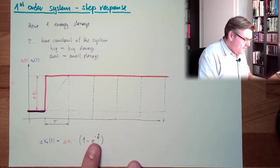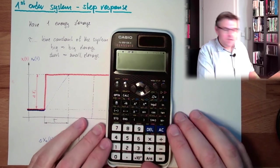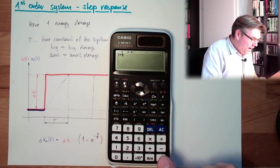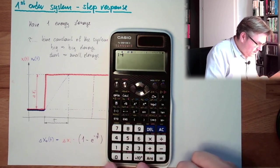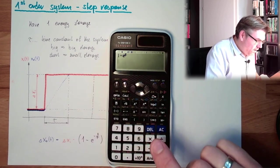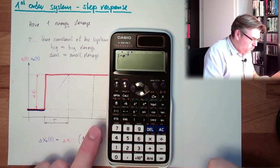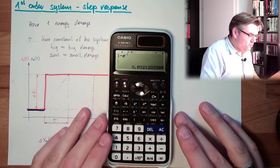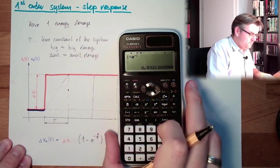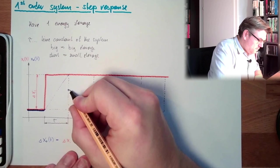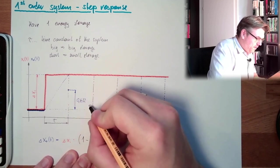If we calculate this and see where we're ending up after one tau, if we are entering here 1 minus e raised by the power of minus 1, because it's one time tau, tau divided by tau is minus 1, then we're ending up at 63.2%. So here, we have around 63% reached. This is 0.632 multiplied by delta xi.